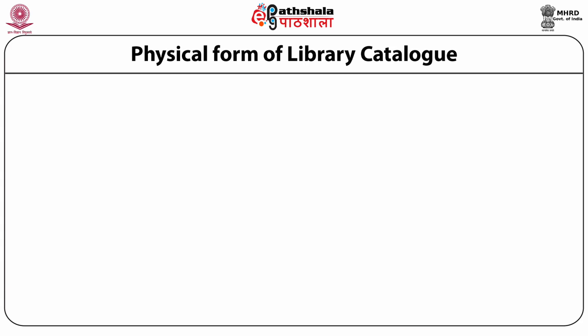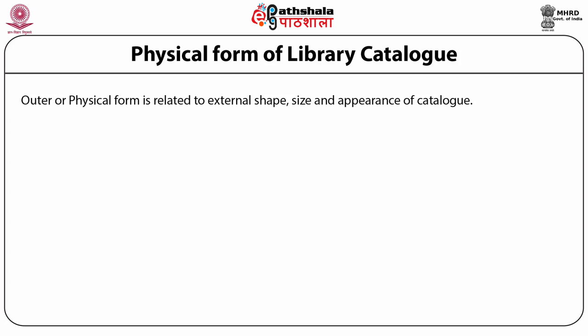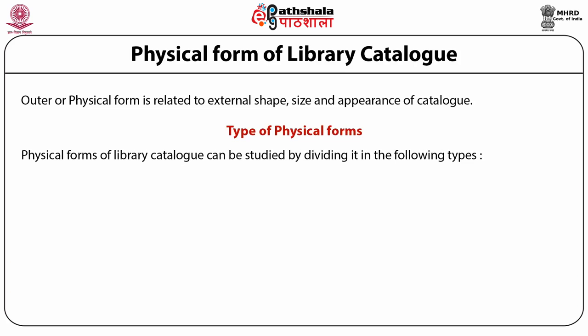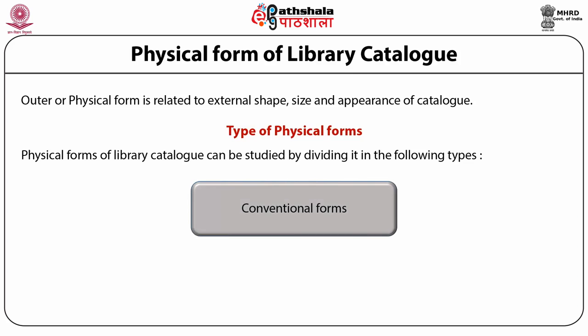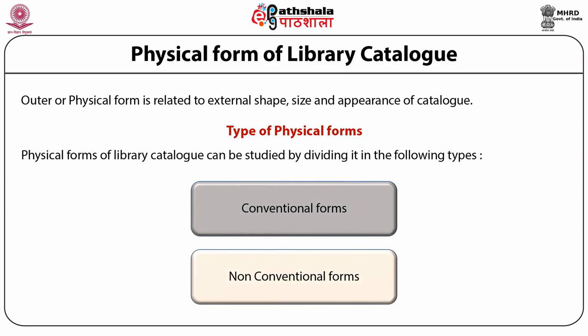Physical forms of library catalog are concerned with the outer or physical form — that is, external shape, size and appearance of the catalog. Physical forms of library catalog can be studied by dividing them into two types: first, conventional forms; and second, non-conventional forms.